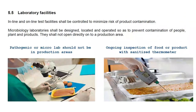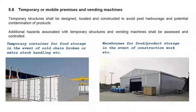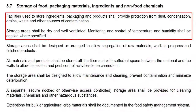Clause 5.5 is Laboratory Facilities. Pathogenic or microbiology labs should not be located in production areas, and ongoing inspection of food or product should use a sanitized thermometer. Clause 5.6 covers Temporary or Mobile Premises and Vending Machines. For example, a temporary container for food storage in the event of a cold chain break or extra stock handling — these temporary emergency structures should be clean, and some prefer to have a dedicated warehouse.